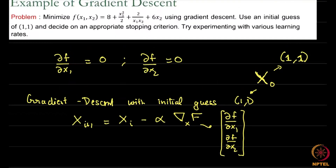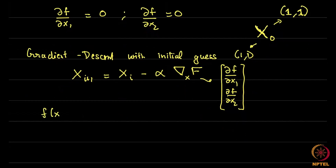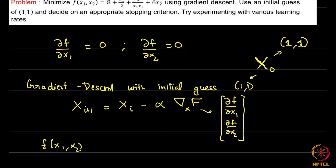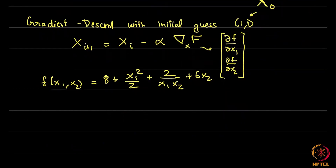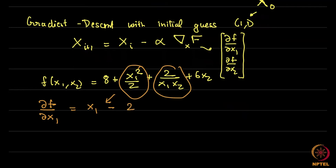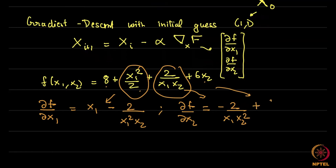This is simple enough but we have to calculate the gradient. Given the function f(x1, x2) equals 8 plus x1 squared divided by 2 plus 2 over x1*x2 plus 6*x2, we need to find the gradient of f. Del f del x1 gives x1, the second term gives minus 2 divided by x1 squared times x2, and the last term gives nothing. Similarly, del f del x2: the first two terms give nothing, the third term gives minus 2 divided by x1 times x2 squared.